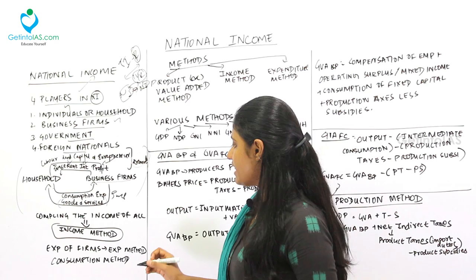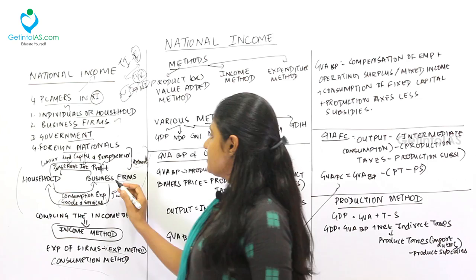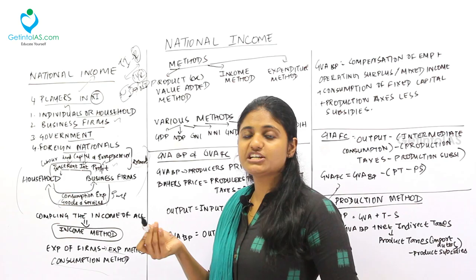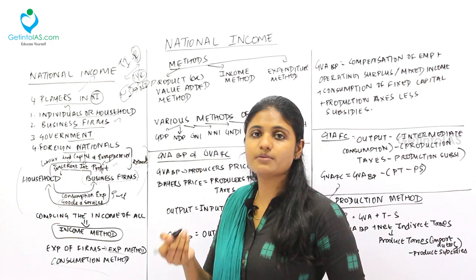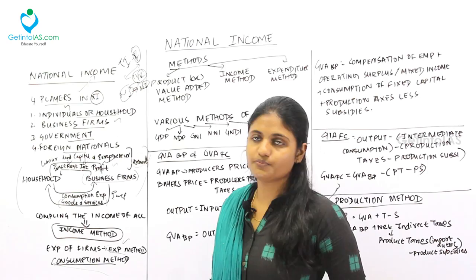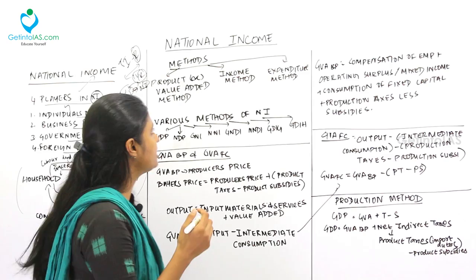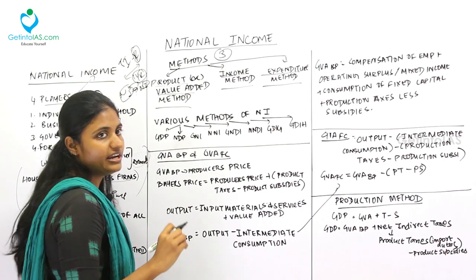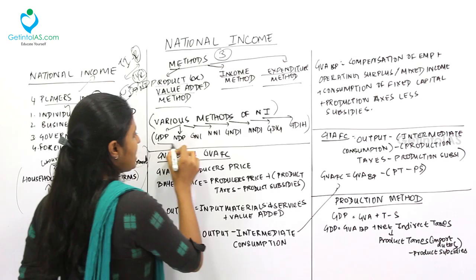Coming to the compilation of national income, we have the income method and the expenditure or consumption method. Under the income method, business firms provide income to households in terms of wages, rent, interest, and profit. Under the expenditure method, business firms spend for households. The three main methods for measuring national income are: the product or value added method, the income method, and the expenditure method.